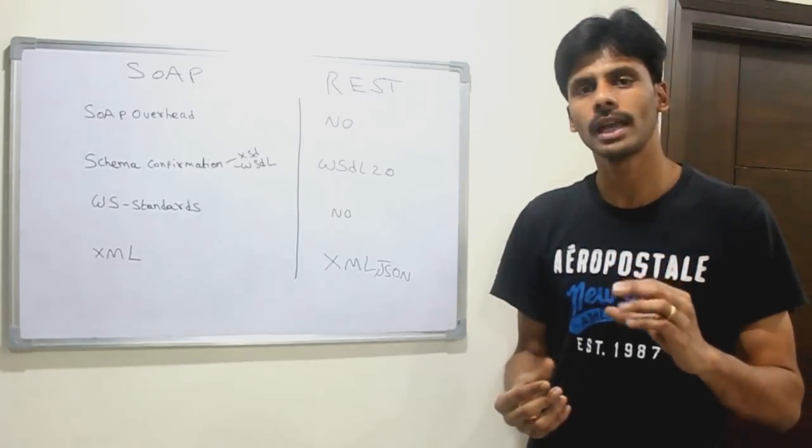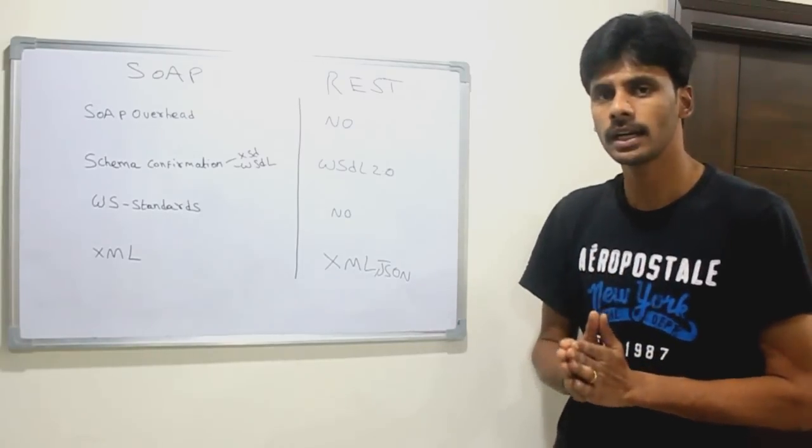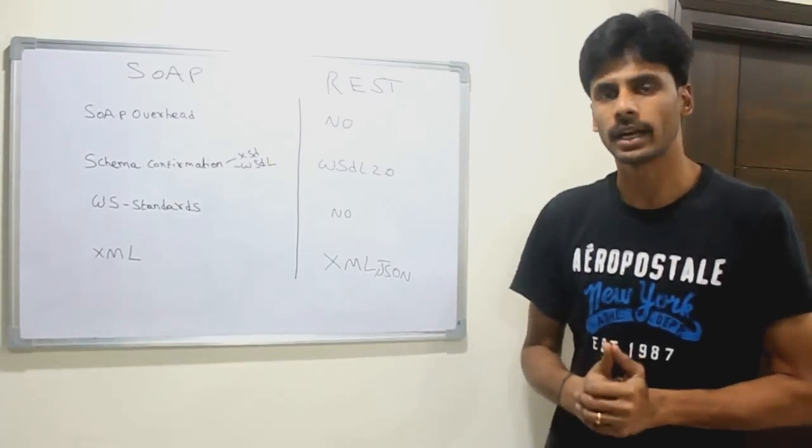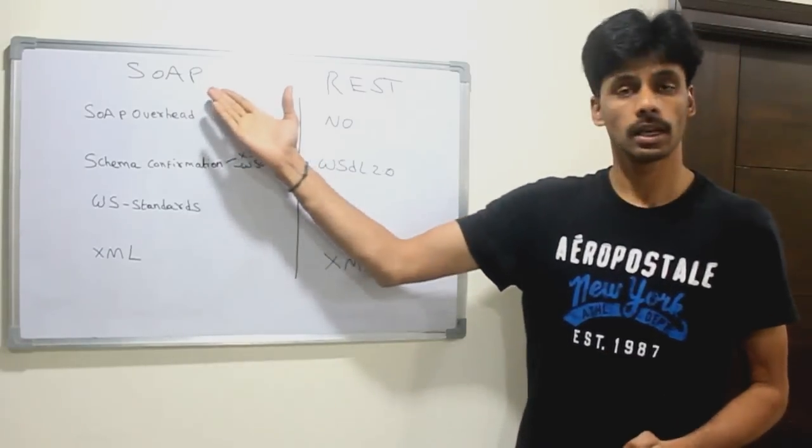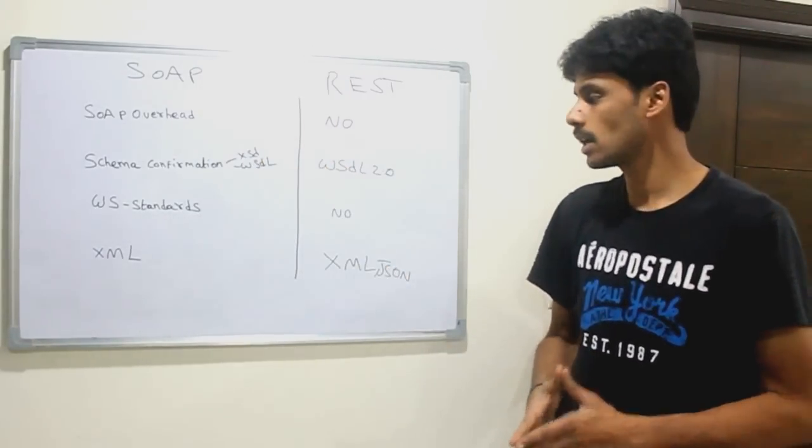The SOAP envelope—each standard defines that a particular set of elements can go into the SOAP header. For example, for security standard username token profile standard, they define username and password which should go into the SOAP header. So that is an important piece which is supported only for the SOAP-based services.